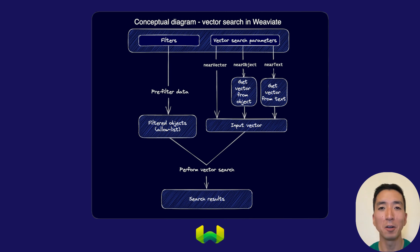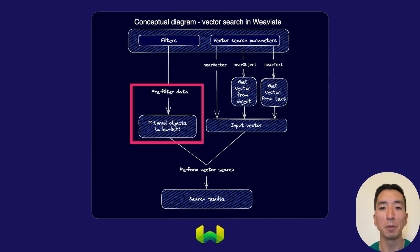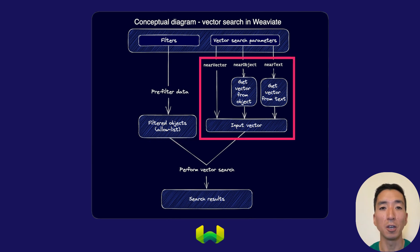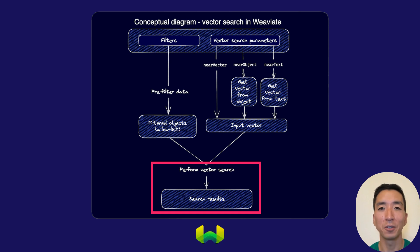A visualization of the vector search process might look something like this. An input is provided containing filters and vector search parameters. With the filters, Weaviate performs a pre-filtering step to obtain an allow list of objects. The vector search parameter is used to determine an input vector, which may involve an additional step such as retrieving the object's vector with near object, or vectorizing the input text with near text. The input vector is then used to perform a vector search from the objects in the allow list, returning the most relevant objects or an aggregation to the user.